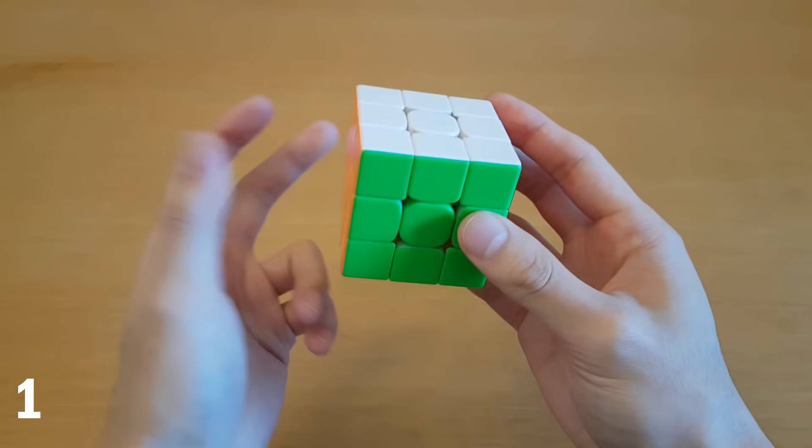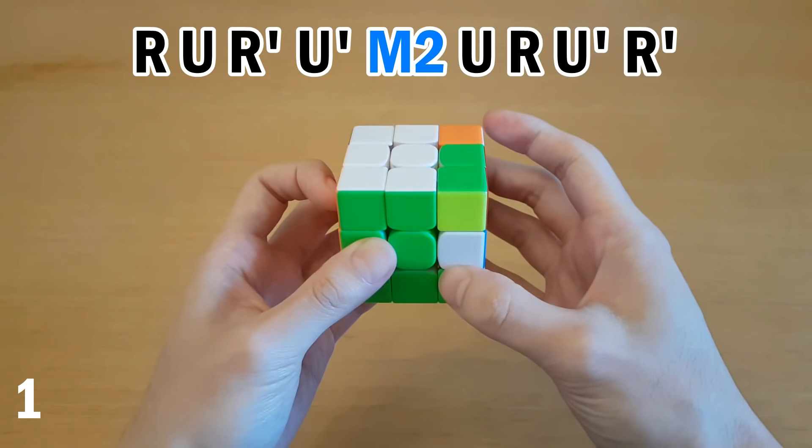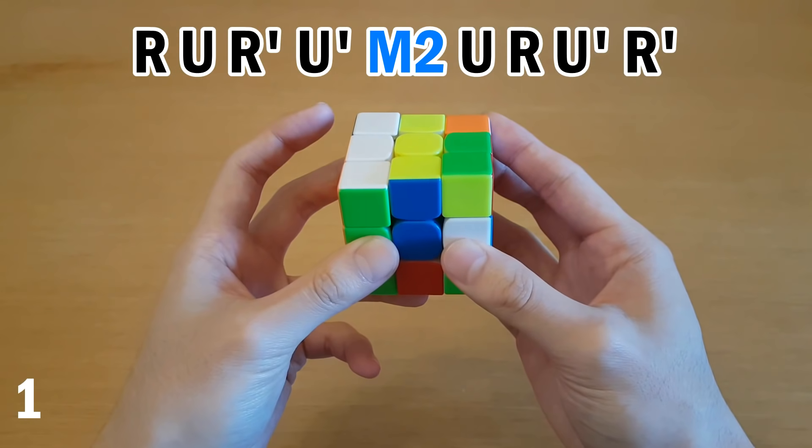The hand you use for M2 depends on what grip you're in. So if you're in home grip, you can use either hand. For example for this target, after the setup I'm still in home grip, so I can do this left-handed or right-handed.